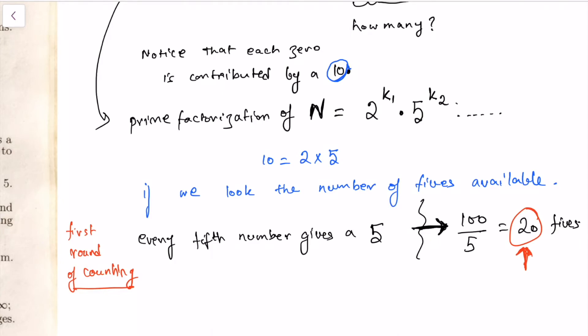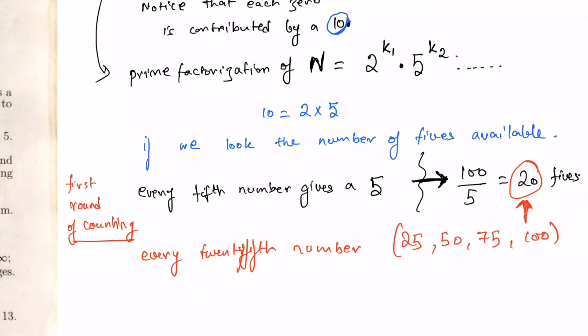Now in the second round we look at every twenty-fifth number, and there are only four of them: twenty-five, fifty, seventy-five, and hundred. And each of them contributes one extra five. Why do I say extra? Because in the first round - this is the second round, right, second round of counting - in the first round we have already counted one of the fives available in, let's say, twenty-five.